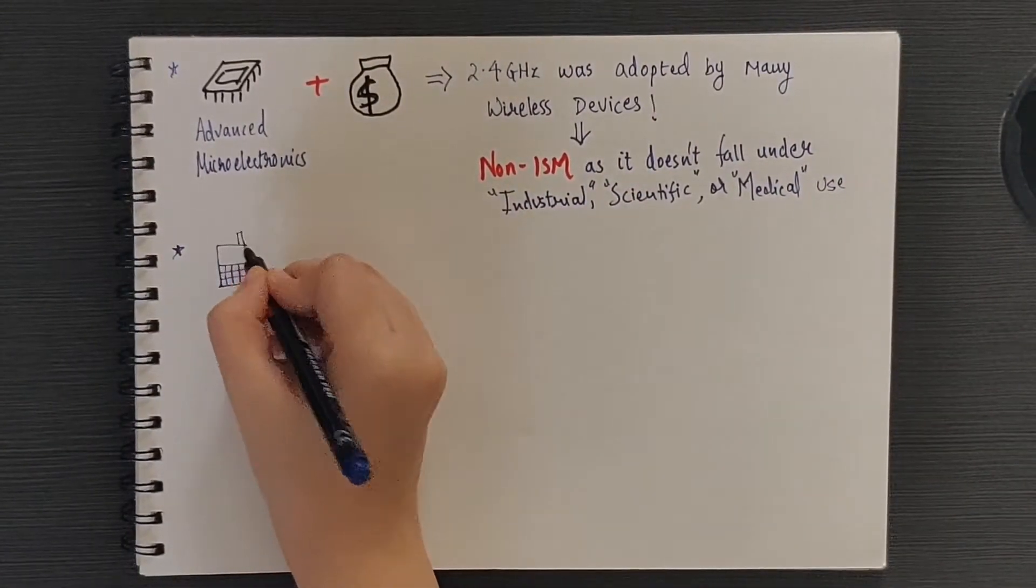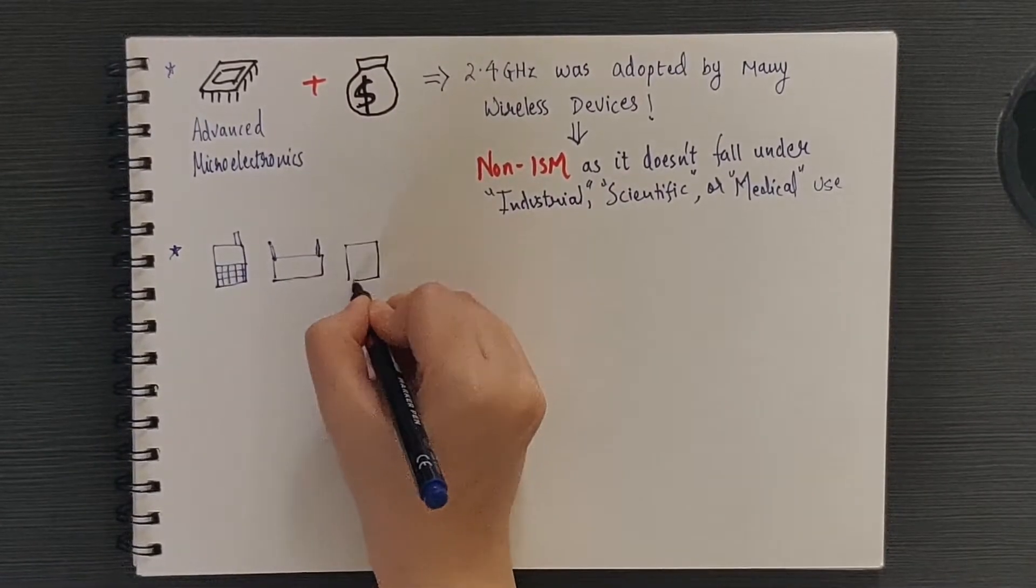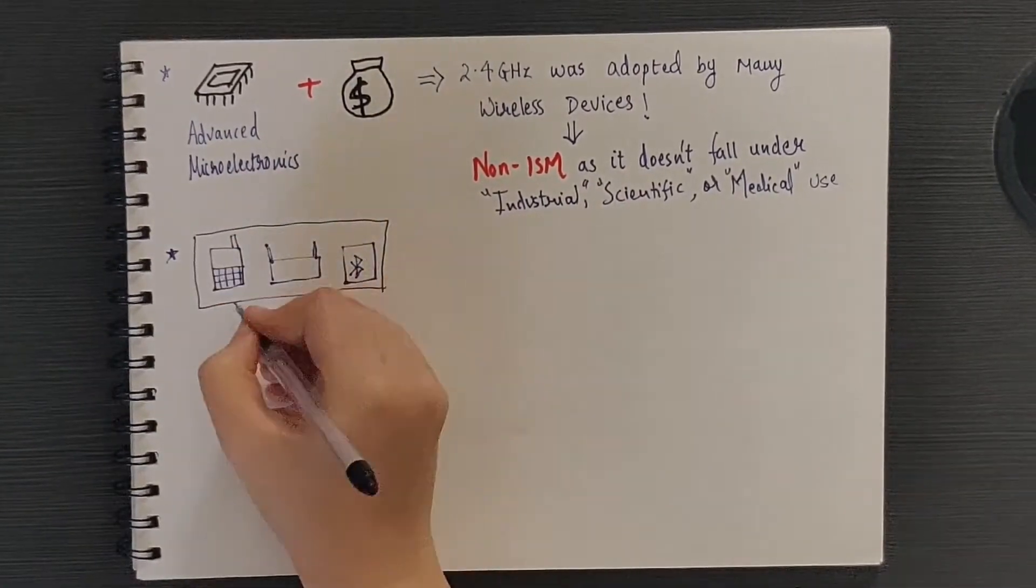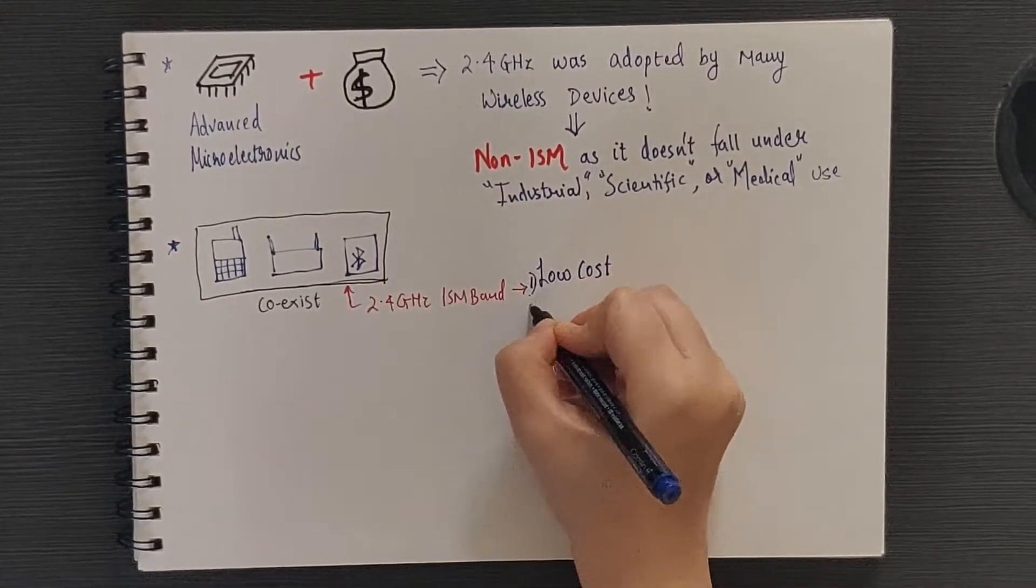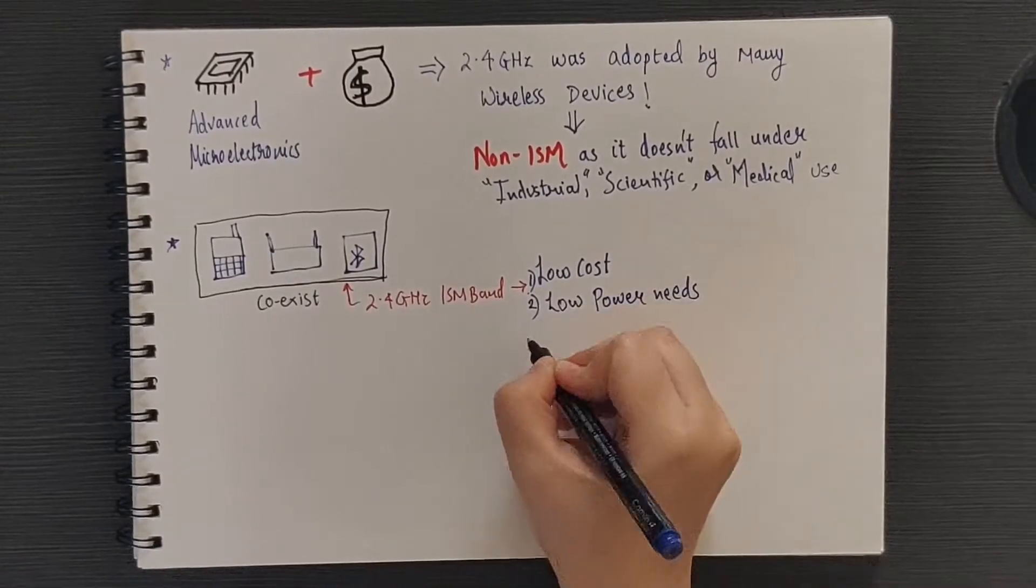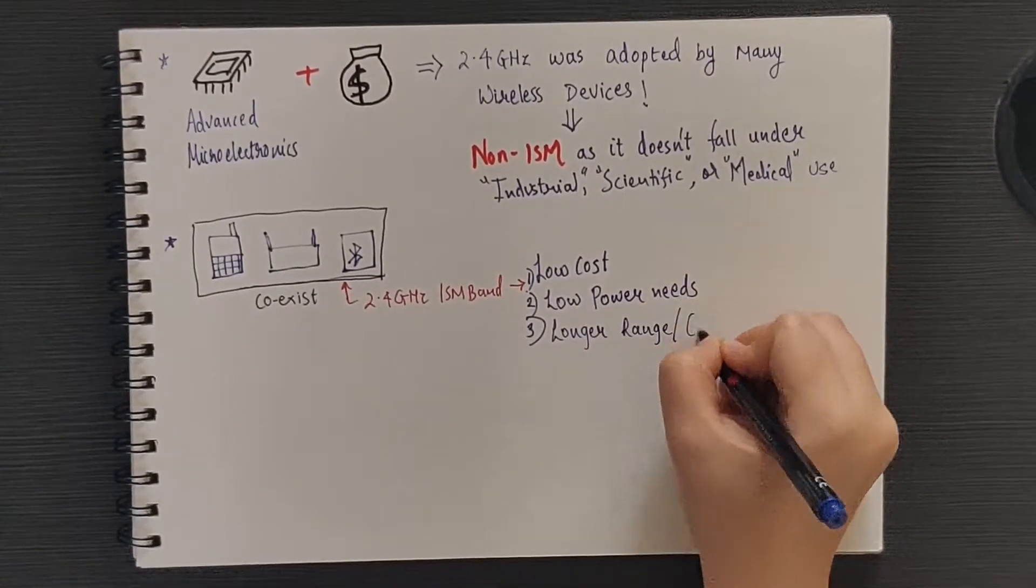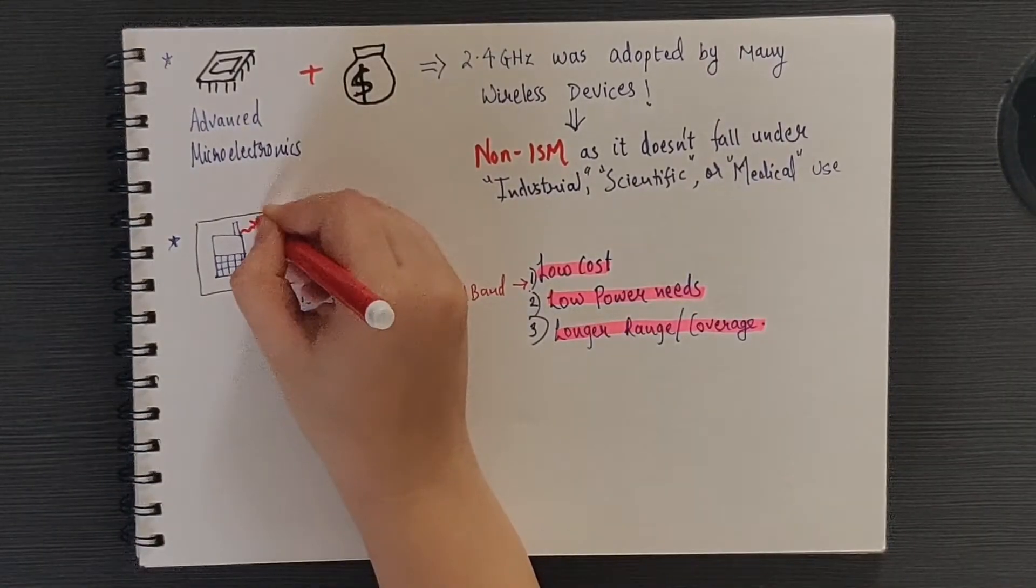Now a range of devices like cordless phones, Wi-Fi routers, Bluetooth devices and many others started using the same band. The 2.4 gigahertz band was ideal due to its low cost to implement, lower power needs and longer range or decent distance capabilities.